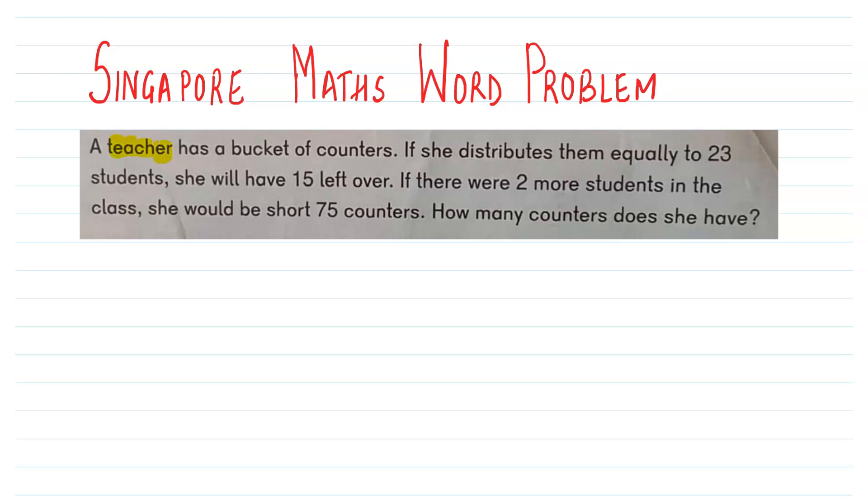The problem says a teacher has a bucket of counters. If she distributes them equally to 23 students, she will have 15 left over.